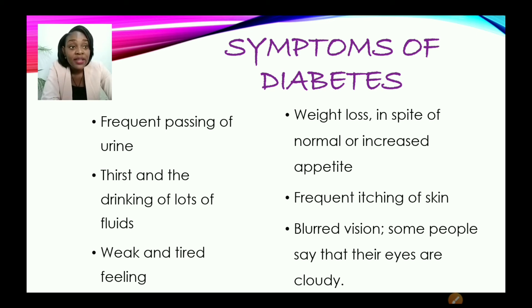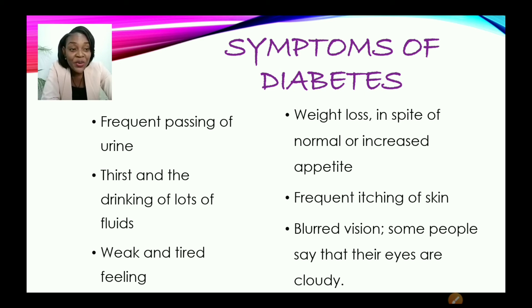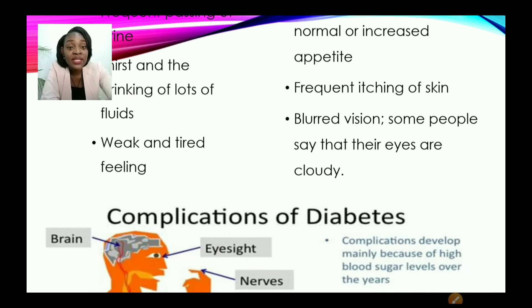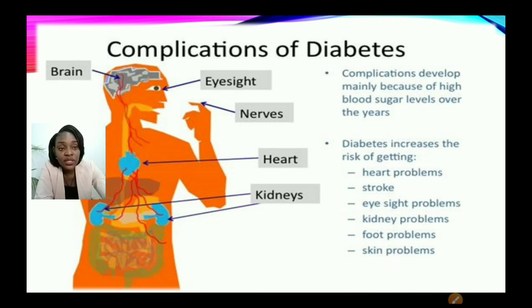Now, let us list them in detail. Symptoms of diabetes: frequent passing of urine, thirst and drinking lots of fluids, weak and tired feeling, loss of weight in spite of normal appetite or increased appetite — these persons are still losing weight. Frequent itching of skin, blurred vision — some people may say their eyes are cloudy. These are all the symptoms, and some of them are early symptoms of persons who are diabetic. It's best to always keep check because the earlier you know, the better you can control certain types of diseases.